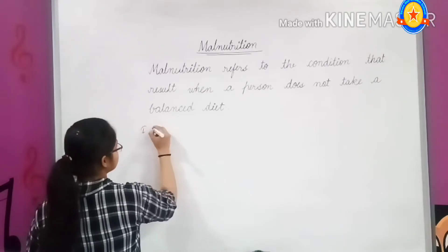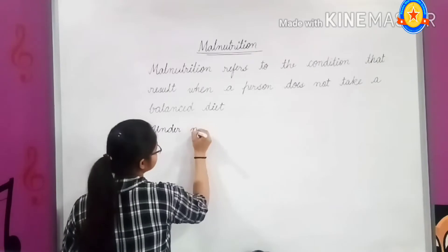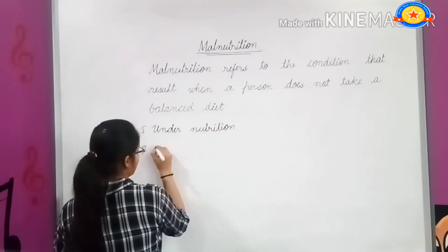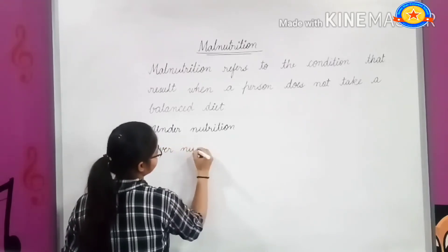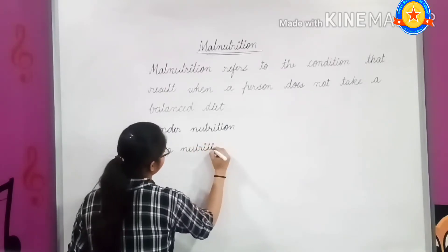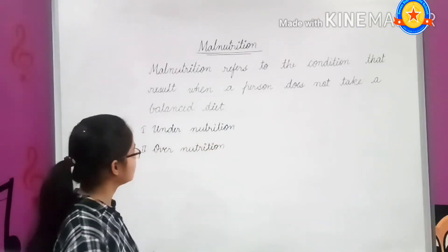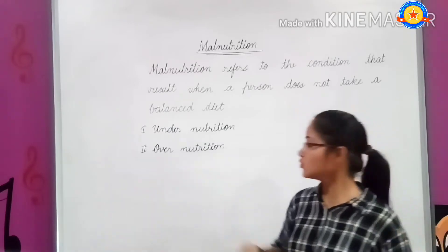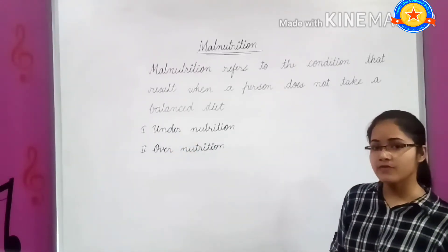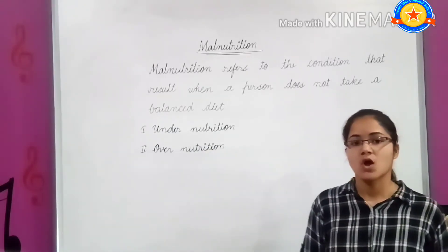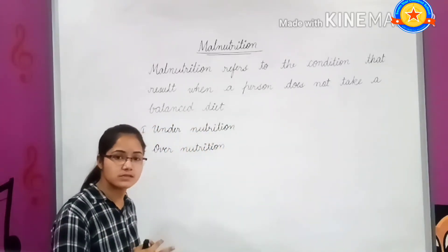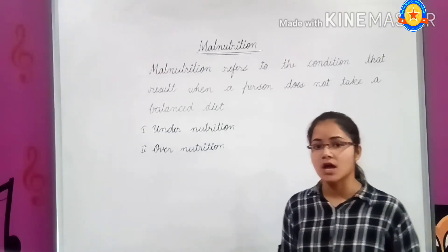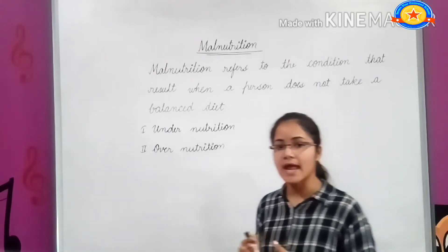There are two conditions of malnutrition. Number one is undernutrition, and number two is overnutrition. If a particular nutrient is less or not available for a longer time, then it leads to undernutrition. Likewise, getting too much nutrition causes overnutrition, which occurs due to intake of excess fat. Both undernutrition and overnutrition are forms of malnutrition, and they cause abnormalities in body parts, stunted growth, and similar problems.